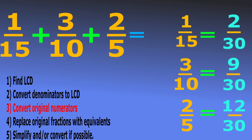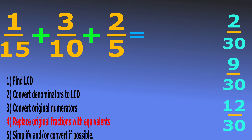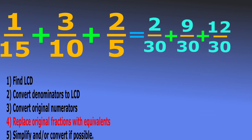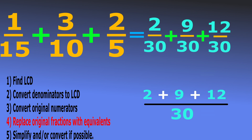Step 4: we replace our original fractions with these equivalent fractions and rewrite the sum. So 1 over 15 plus 3 over 10 plus 2 over 5 equals 2 over 30 plus 9 over 30 plus 12 over 30. This is a sum with similar fractions, so we add the numerators while keeping the denominator 30: 2 plus 9 plus 12 over 30, which gives us 23 over 30.